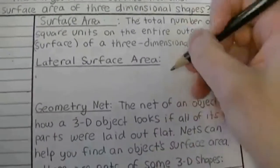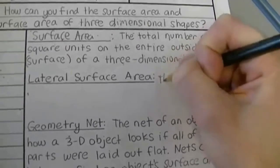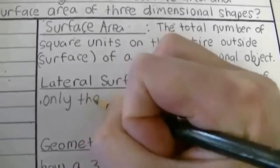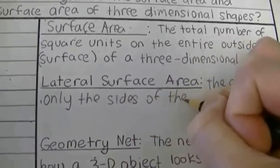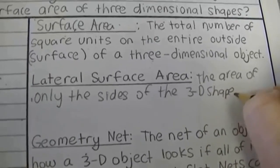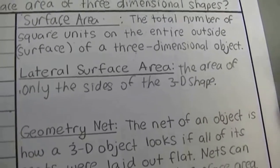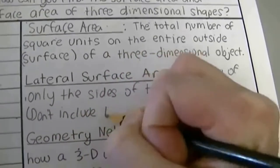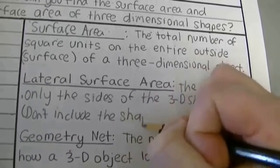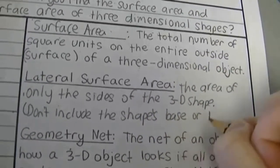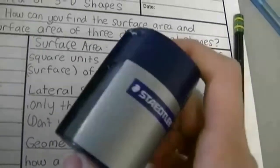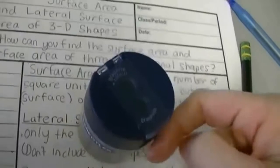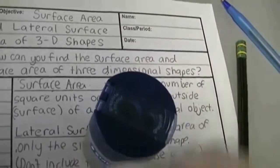Lateral surface area is the area of only the sides of the 3D shape. You're not going to include the shape's base or the top when calculating lateral surface area. With this example, it's just going to be the area all the way around the side. Do not include the top and don't include the base — lateral surface area is just the sides.